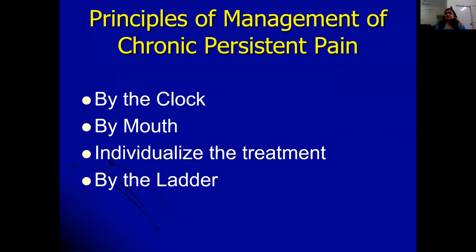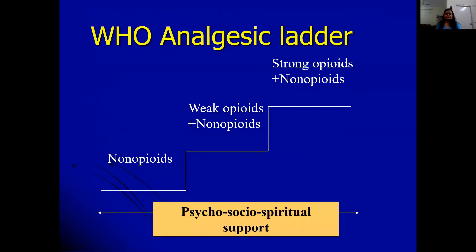The fourth principle is using the ladder. The WHO introduced the three-step analgesic ladder in 1986, originally for cancer pain management, but it is also used for non-cancer pain. Step one is non-opioids, step two is weak opioids, and step three is strong opioids. Non-opioids include paracetamol and NSAIDs; weak opioids include tramadol; and strong opioids will be discussed individually.